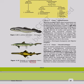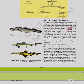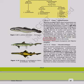Class Cyclostomata: All living members are ectoparasites on some fishes. They have an elongated body bearing 6–15 pairs of gill slits for respiration. Cyclostomes have a sucking and circular mouth without jaws. The body is devoid of scales and paired fins; cranium and vertebral column are cartilaginous; circulation is closed type. They are marine but migrate to freshwater for spawning; after spawning they die within a few days. Larvae return to the ocean after metamorphosis. Examples: Petromyzon (lamprey) and Myxine (hagfish).